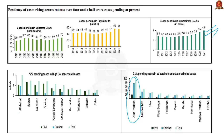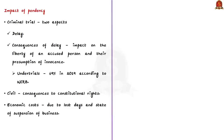These data provide an idea about the grave nature of pendency of cases in India and can be cited in main answer writing. The first and foremost consequence of pendency is the delay in justice. There are two aspects of delay in the context of criminal trial: first, the time taken to complete a trial and give a judgment; second, the pendency and its effect on under-trials. Criminal law is based on the presumption of innocence — an accused is presumed innocent until proven guilty.